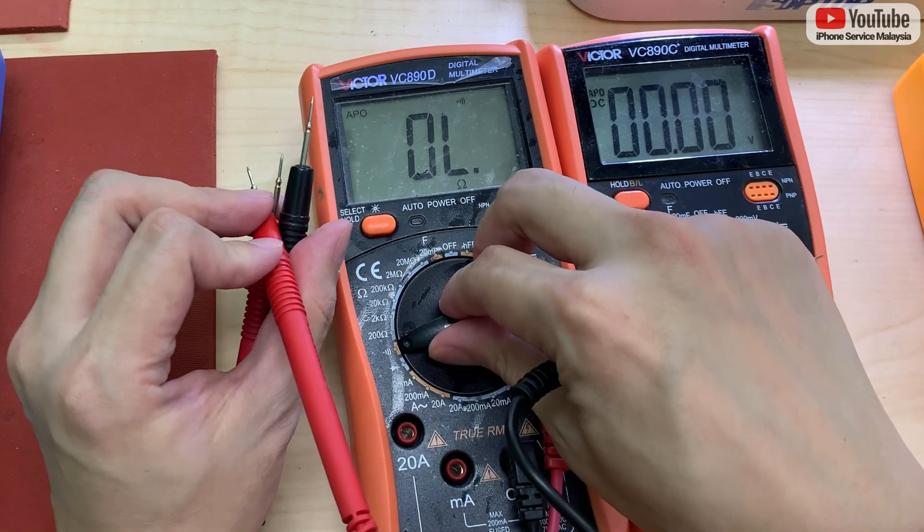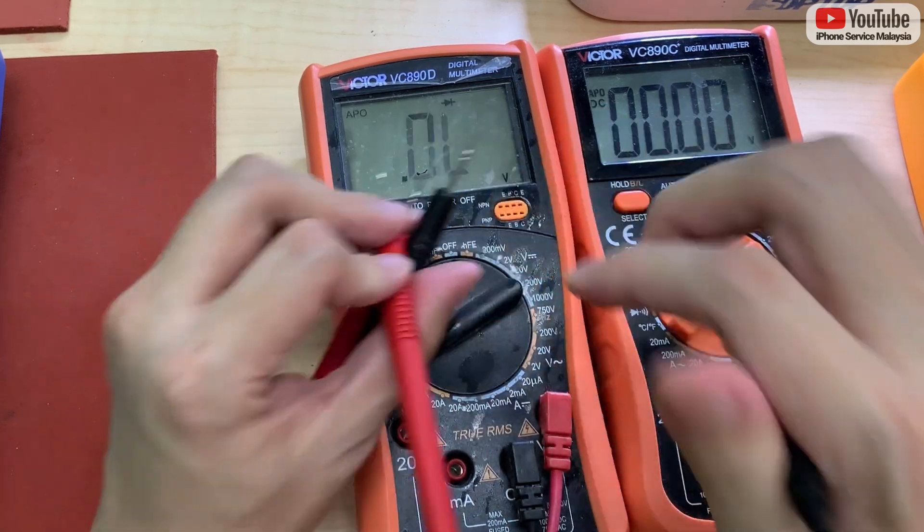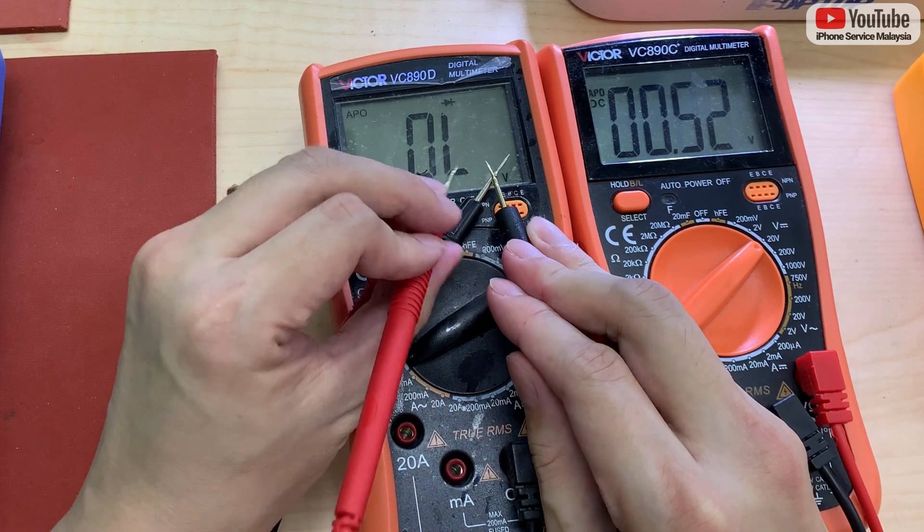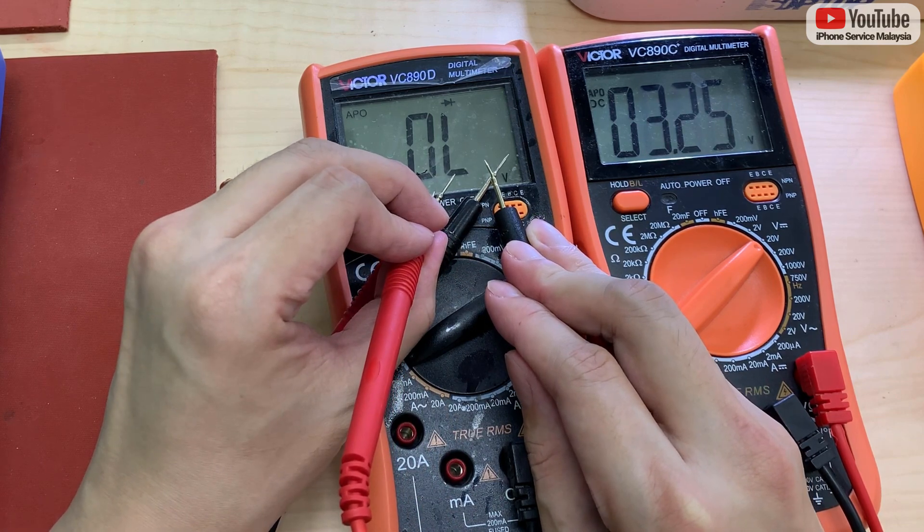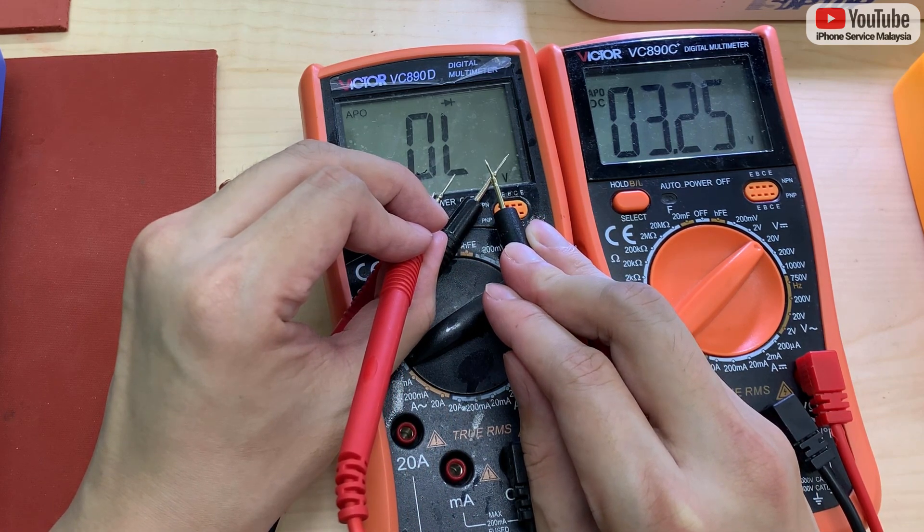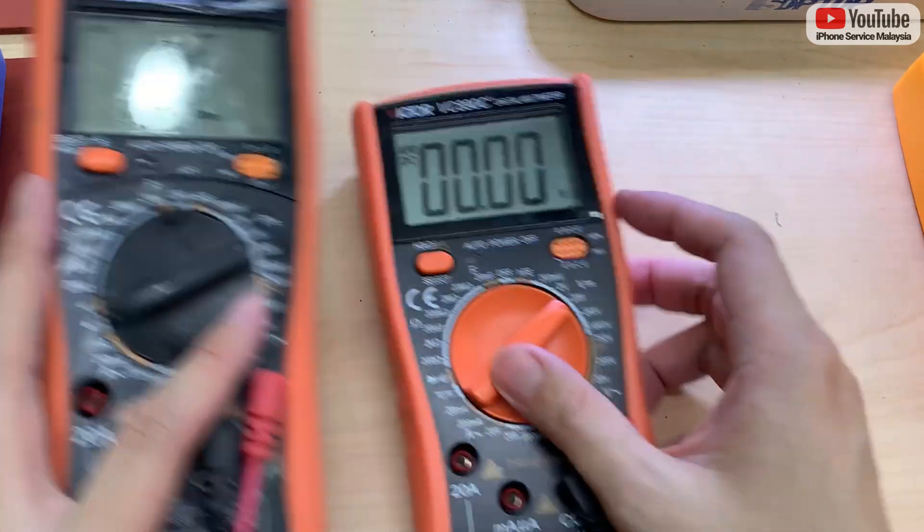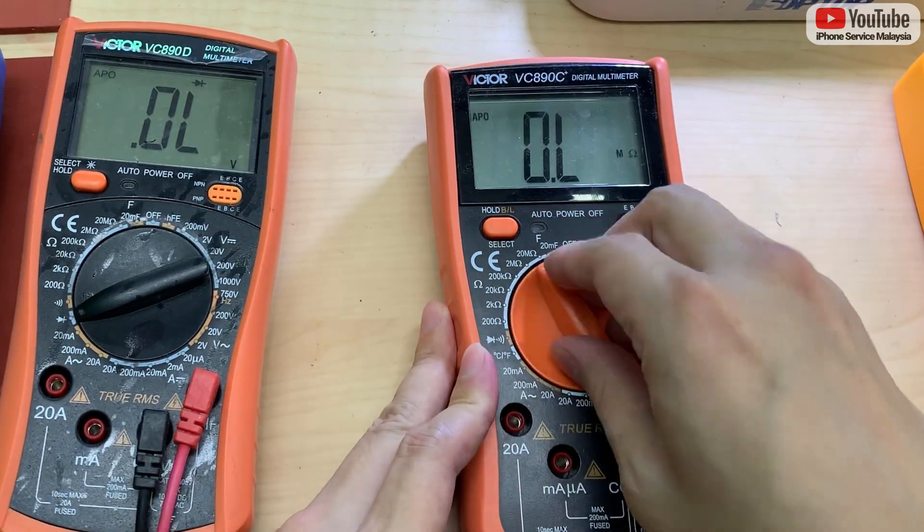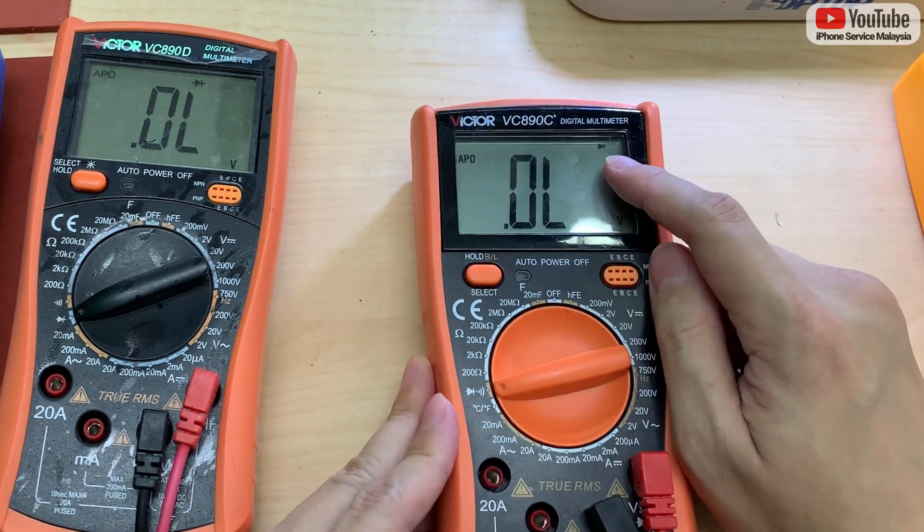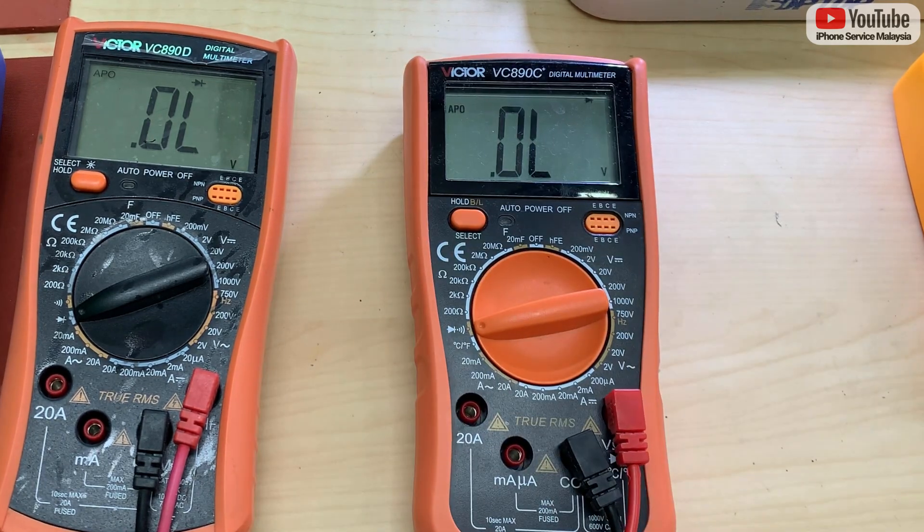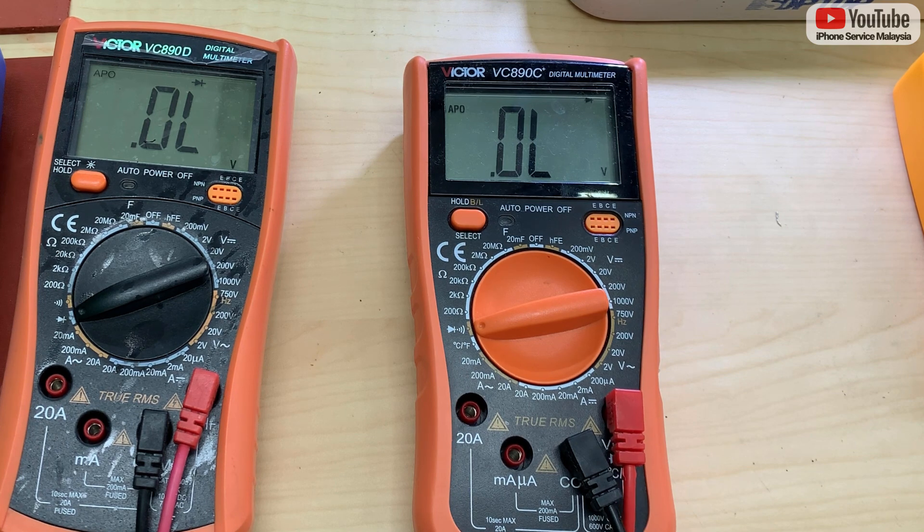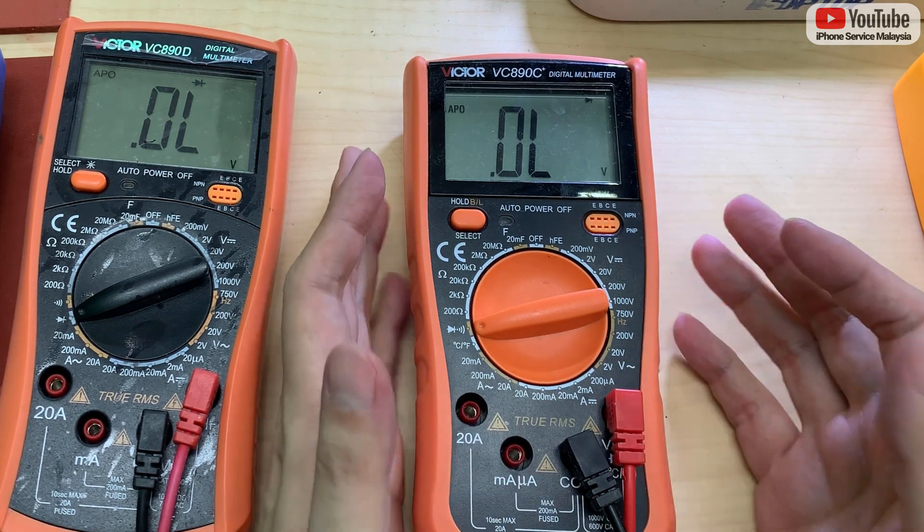So if I switch it to the dial mode, the output is 3.25. So this is why if you buy this kind of multimeter that cannot switch between the buzzing mode and the dial mode, you will have one function less than us.